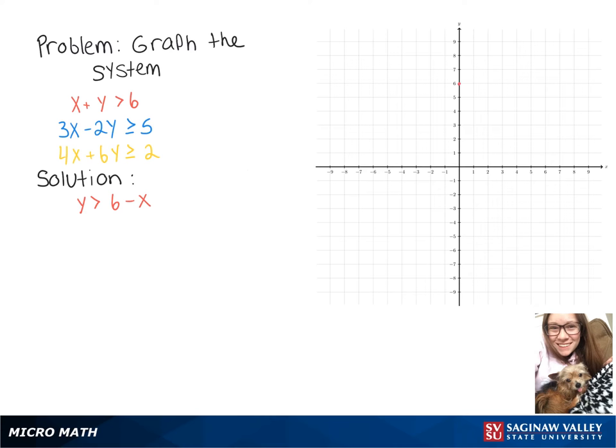So we'll graph that line over here, and it's going to be a dashed line because it's strictly greater than. And then because it's greater than, we're going to shade everything above that line.